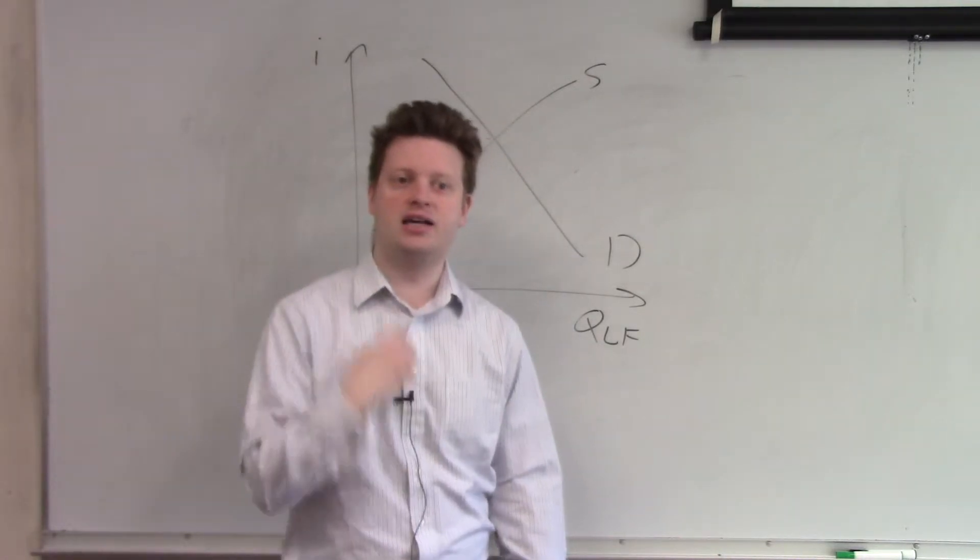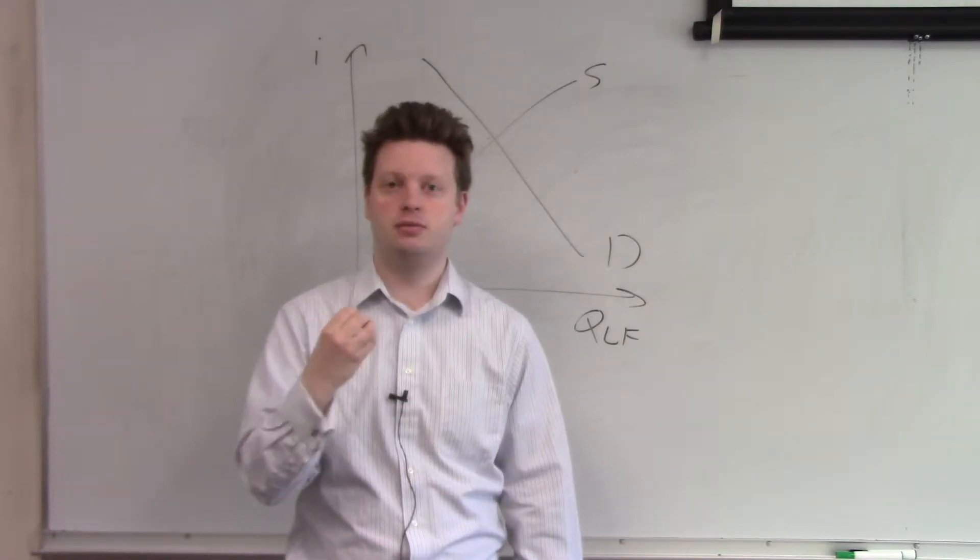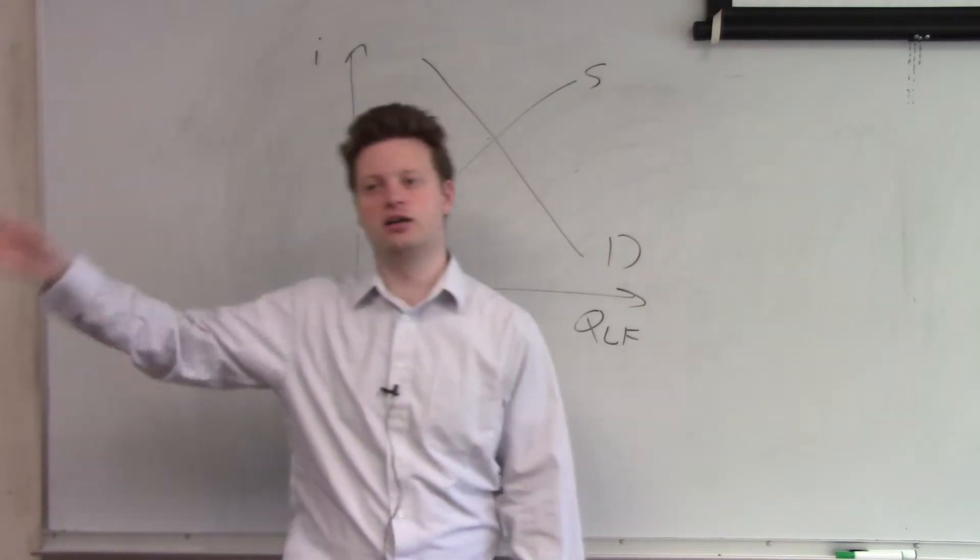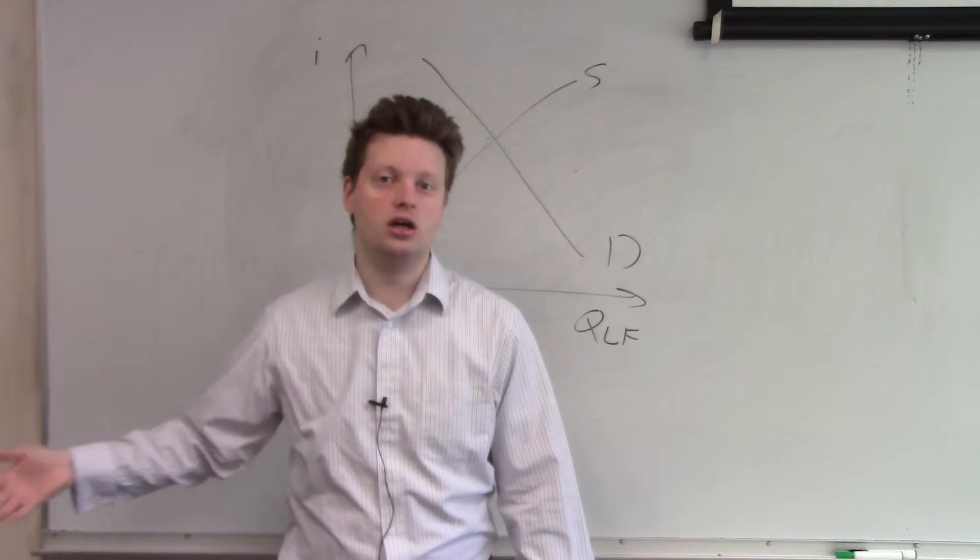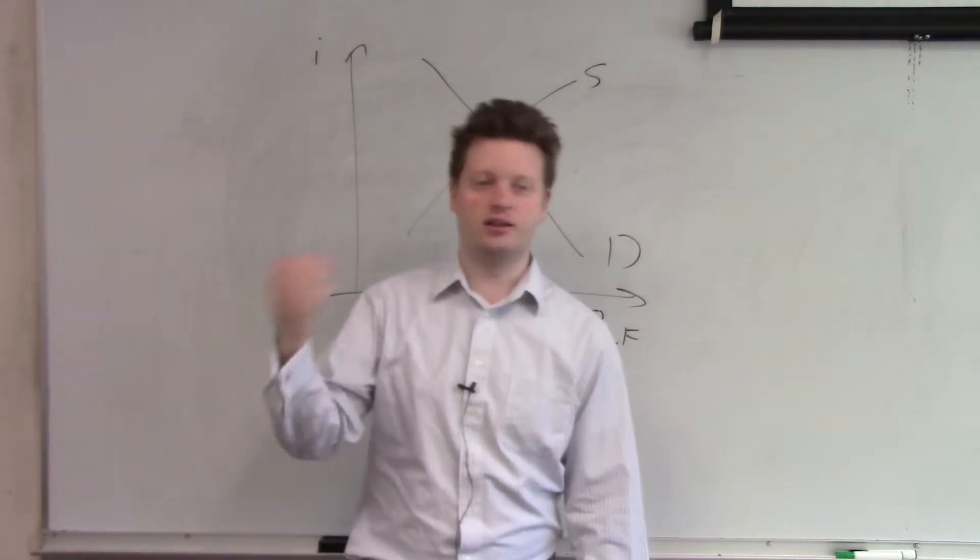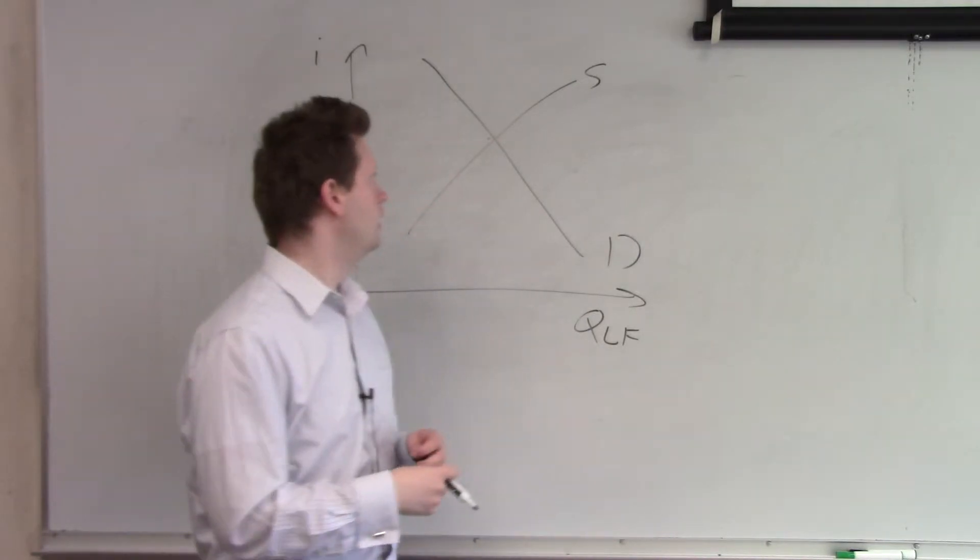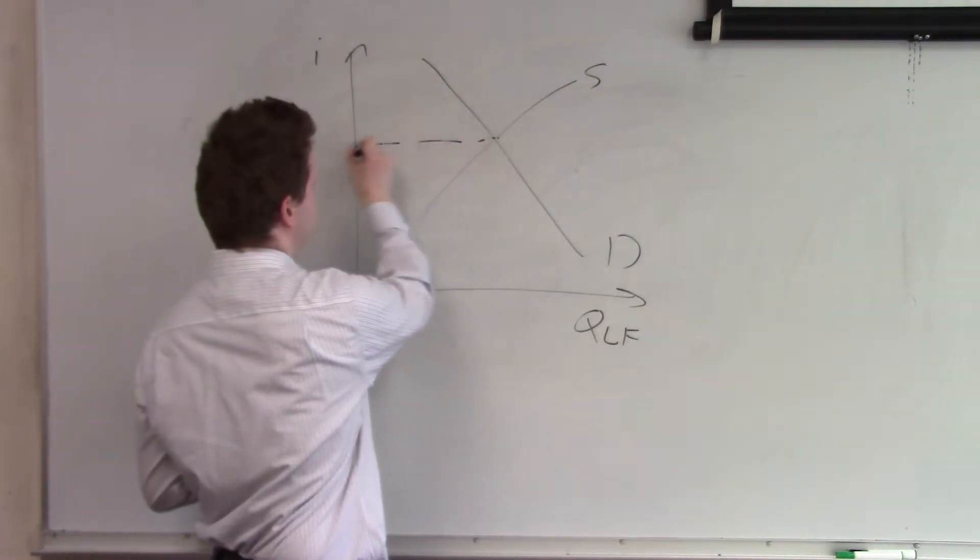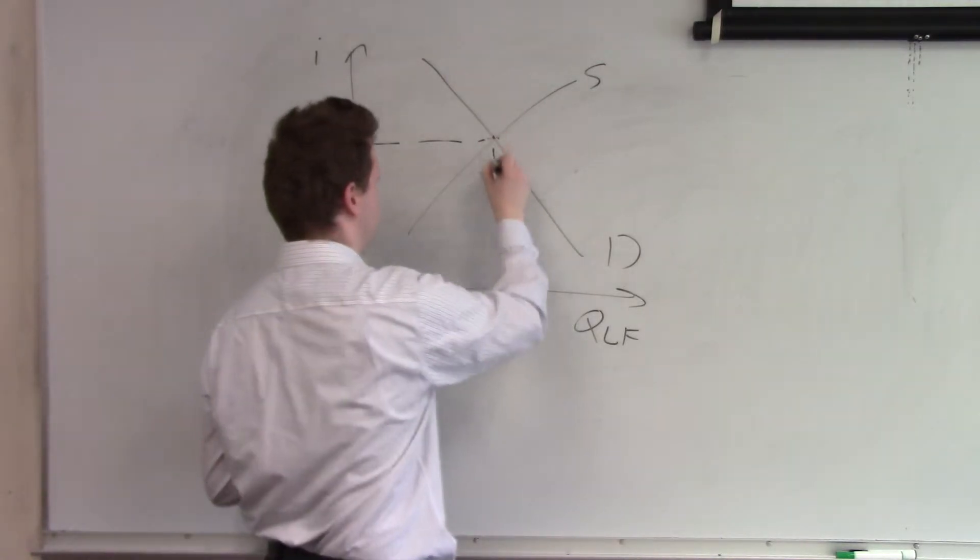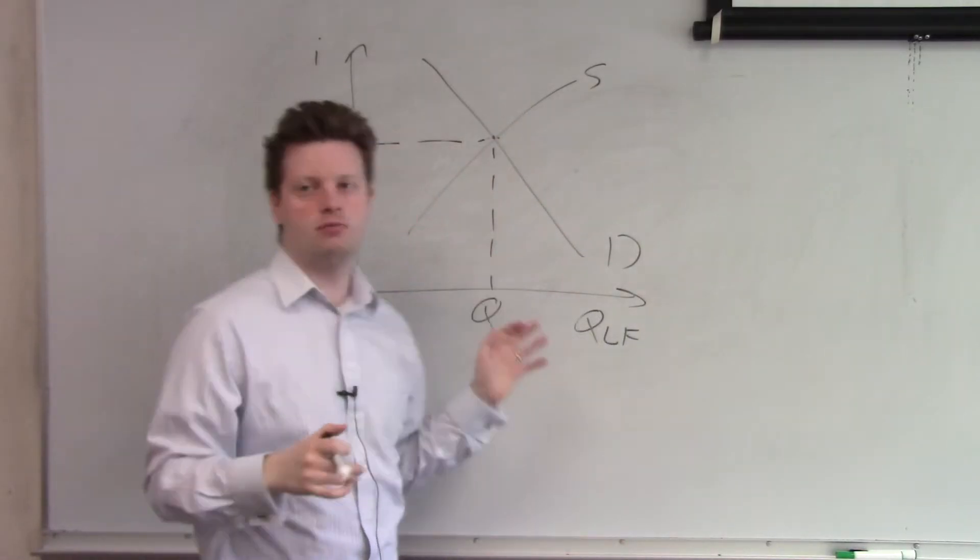So anything I save as a household or as a consumer is immediately a loanable fund because somebody else can then take these funds and spend them to buy a machine, to buy a factory, to build something and then give me a return on my savings. And we can see here in the graph, the return on the savings gives us the interest rate. So we have drawn the standard loanable funds market.